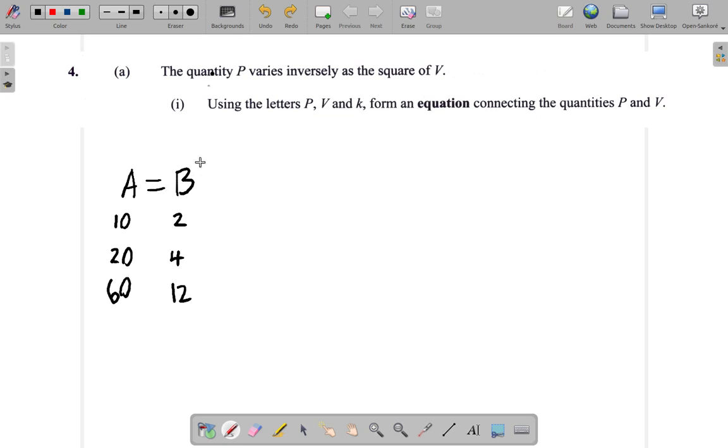If A and B vary, if A vary as the square of B, then you would have A equal to this sign, meaning to vary. If A vary as the square of B, then you would have to have this situation.